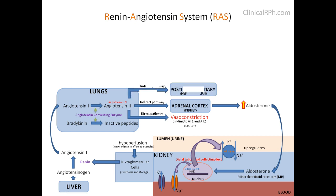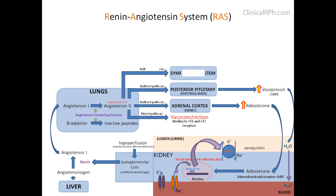Angiotensin 2 can also stimulate the posterior pituitary via the hypothalamus to increase vasopressin, thereby increasing the amount of water being reabsorbed. Additionally, angiotensin 2 can stimulate the sympathetic system to increase catecholamines such as epinephrine and norepinephrine.